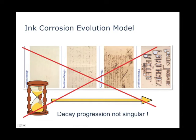The three cases that we have just shown cannot be explained with the current ink corrosion evolution model. Obviously, the world is more complex.